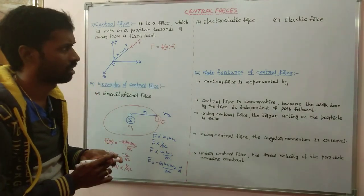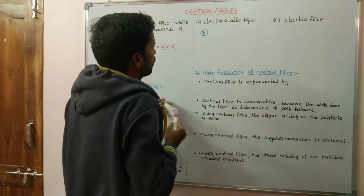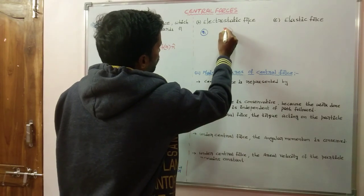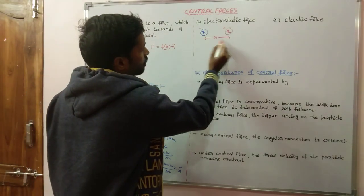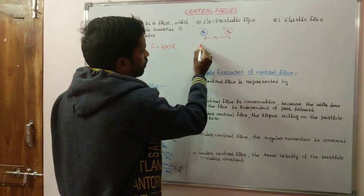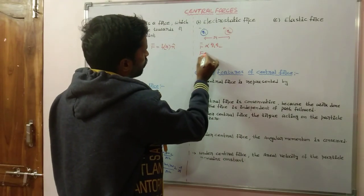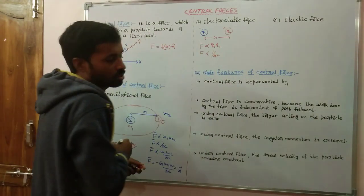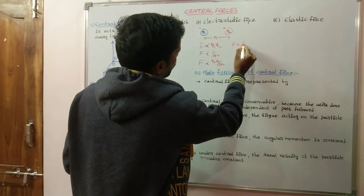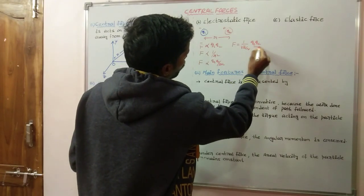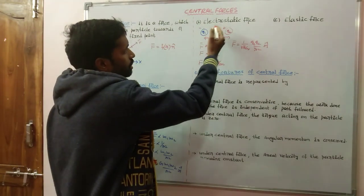Another example of central force is electrostatic force — the Coulombic repulsive or attractive force. Consider charge q1 and charge q2 separated by distance r. The Coulombic attractive or repulsive force exists between them. Force is directly proportional to the product of the two charges and inversely proportional to the square of the distance: F = (1 / 4πε₀) · q1·q2 / r². In vector form: F bar = (1 / 4πε₀) · q1·q2 / r² · r-cap. This is one of the best examples of central force.